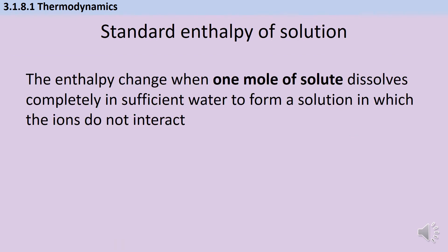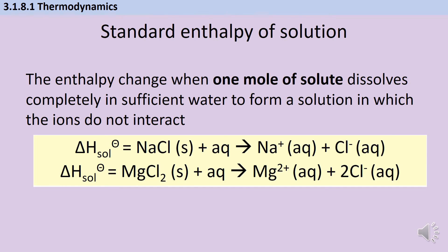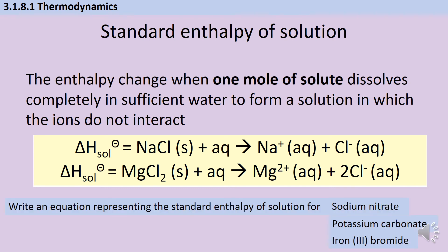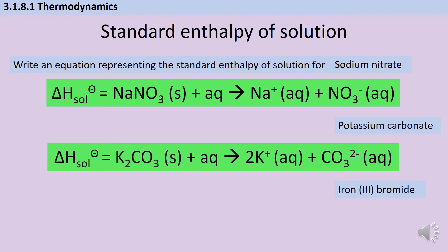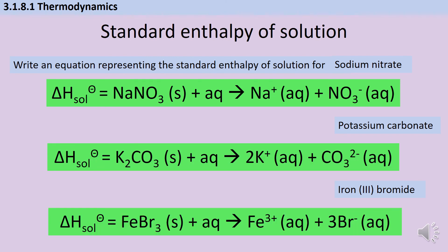The enthalpy of solution is different to the enthalpy of hydration. Hydration involves gaseous ions, whereas solution is simply dissolving an ionic compound in water — the enthalpy change when one mole of a solute dissolves completely in enough water that the ions no longer interact with each other. For each equation we have one mole of the ionic solid on the left splitting into its constituent ions. For example: sodium nitrate splits into Na⁺ and NO₃⁻, potassium carbonate into K⁺ and CO₃²⁻, and iron bromide into Fe ions and Br⁻.